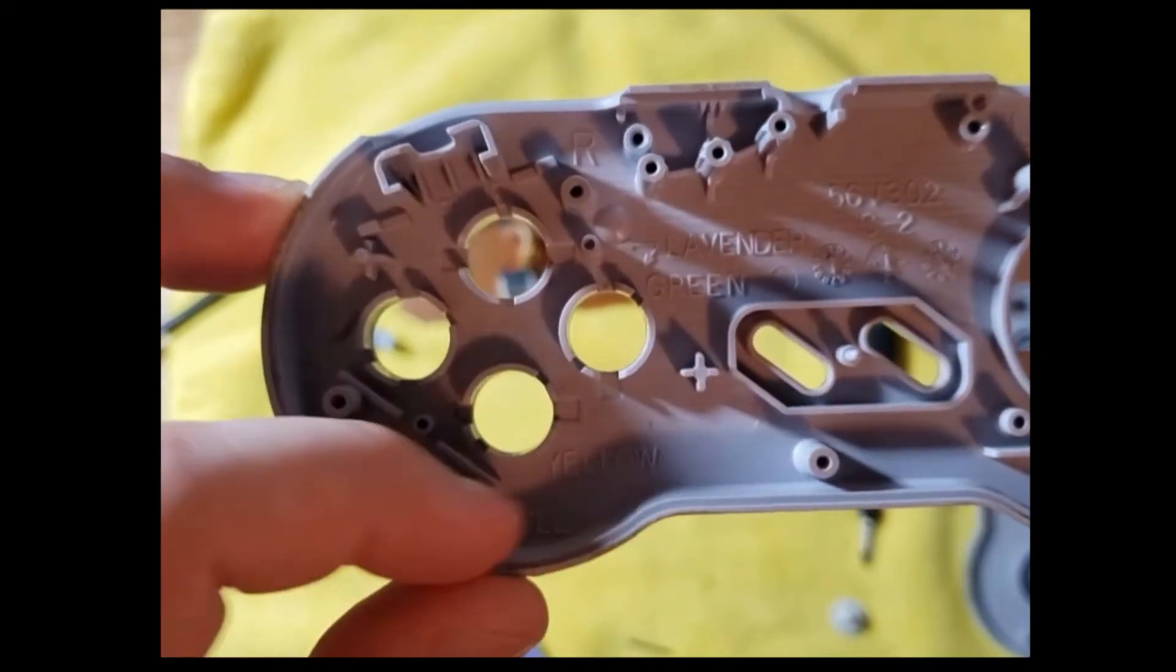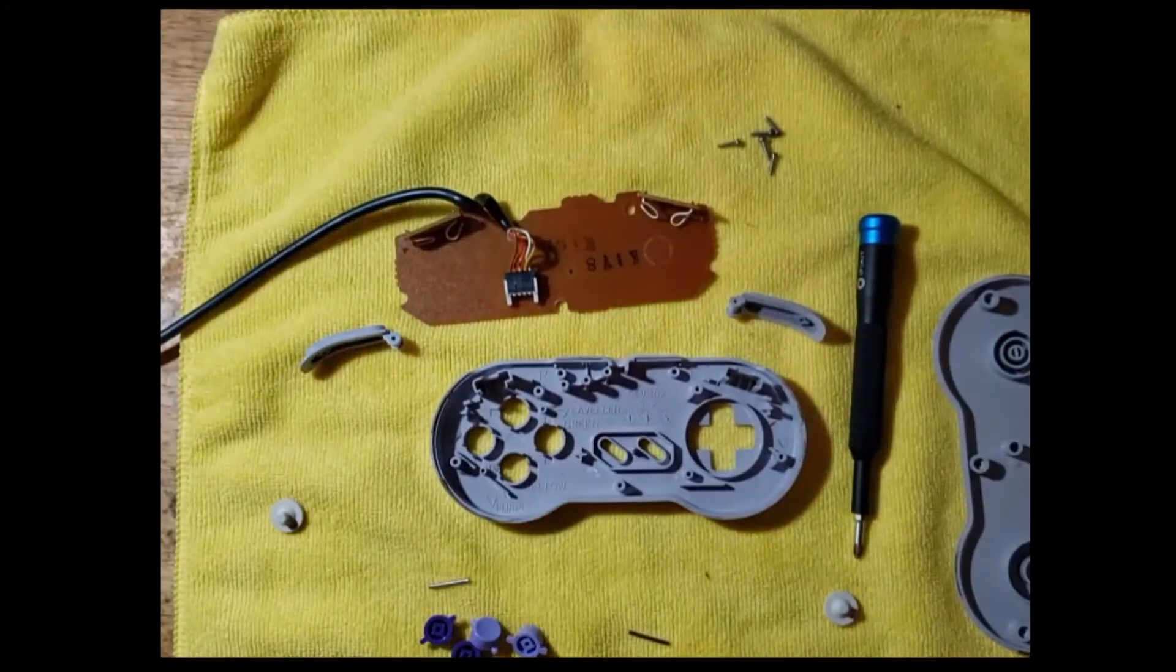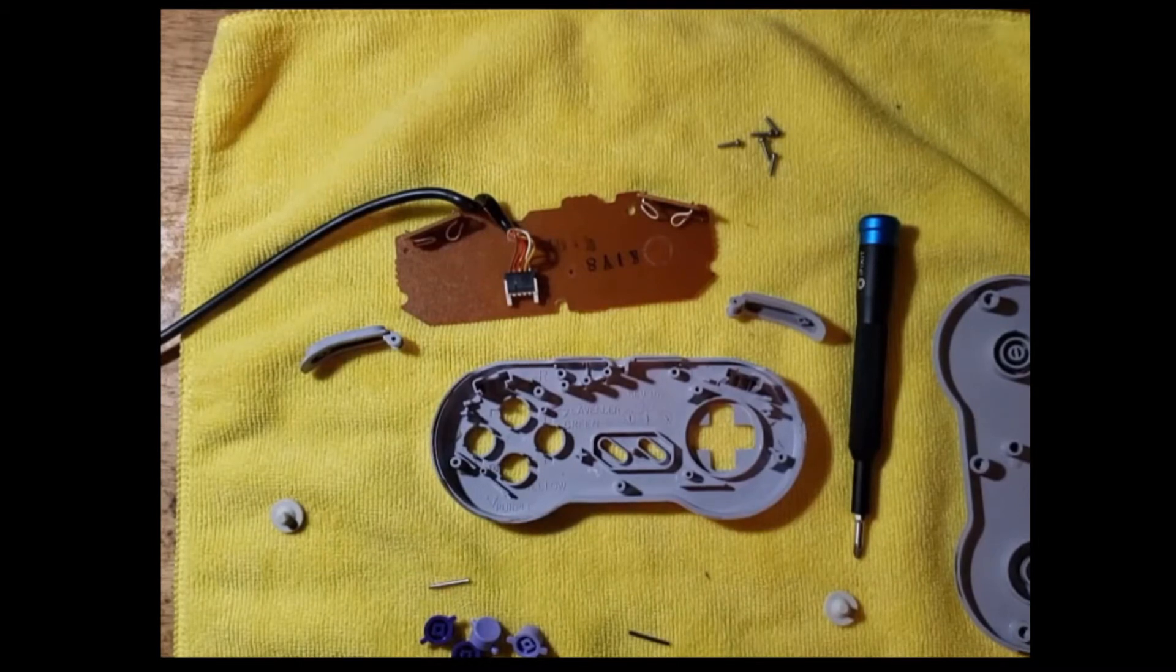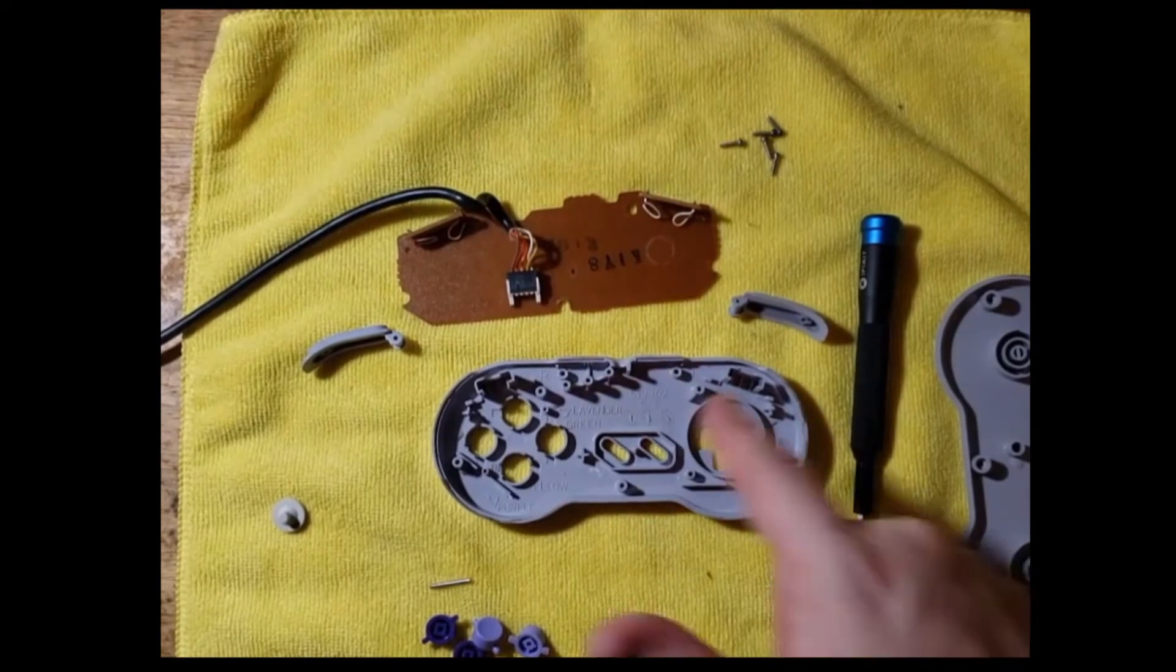Now you'll see that it does have labels for like red, yellow, green, all those. Those are the Super Famicom colors. So you can't rely on that here. It does have purple and lavender outlined as well though. So it does actually remind you of where all of the items are. These things are really cool.